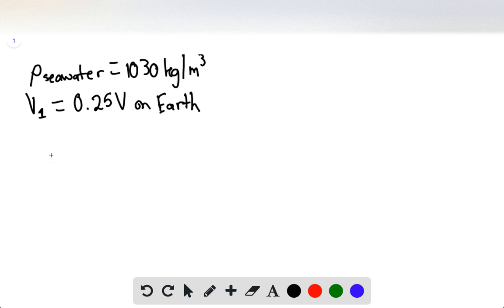And we have the density of glycerin, which is going to be 1260 kilograms per meter cubed. And we're trying to find the volume V2 on Cassi.